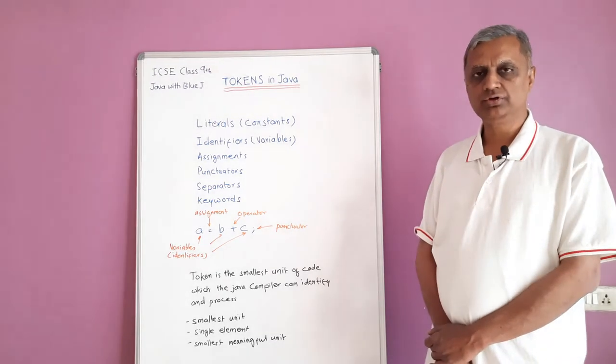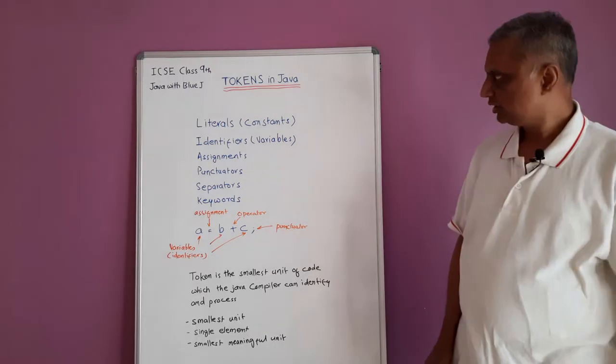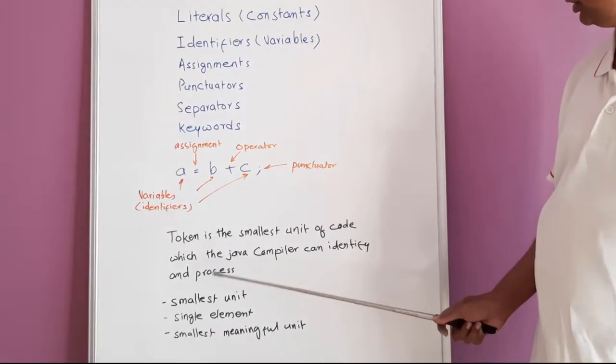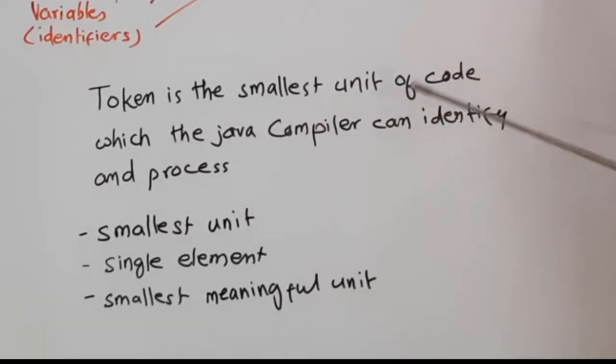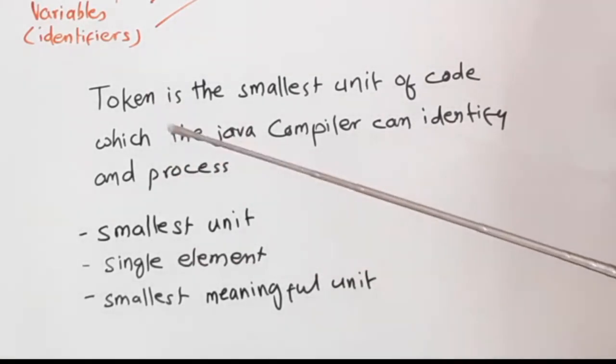But in Java, we are going to see what a token is. The definition of token is: token is the smallest unit of code of Java which the Java compiler can identify and process. So, let us see a small example.